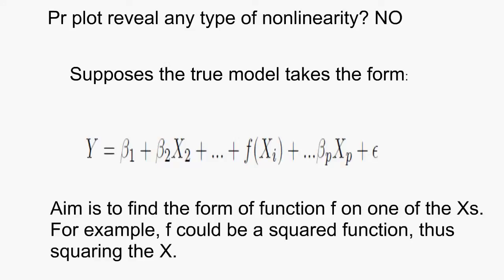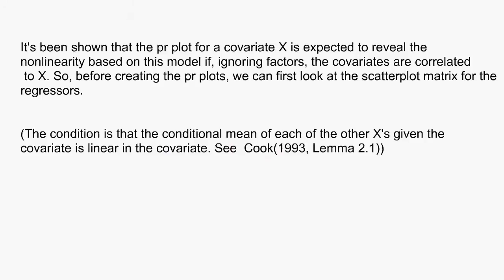The PR plot is based on the true model being linear in the parameters but possibly nonlinear in a covariate. The regressors may be a mix of covariates and factors, and the aim is to determine the function F that may be nonlinear — for example, F could be a power. It has been shown that the PR plot for covariate X is expected to reveal the nonlinearity if, ignoring factors, covariates are correlated to X.